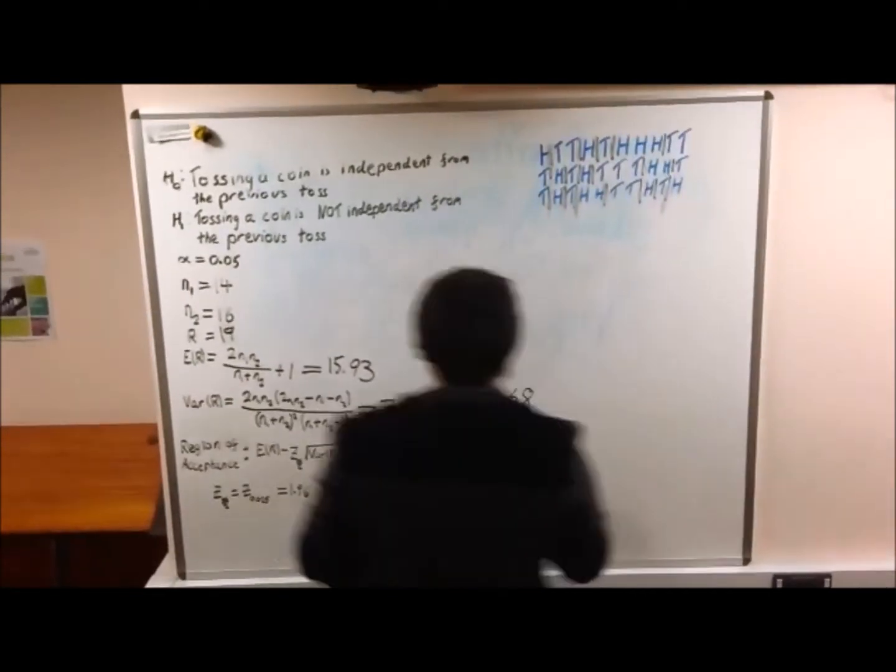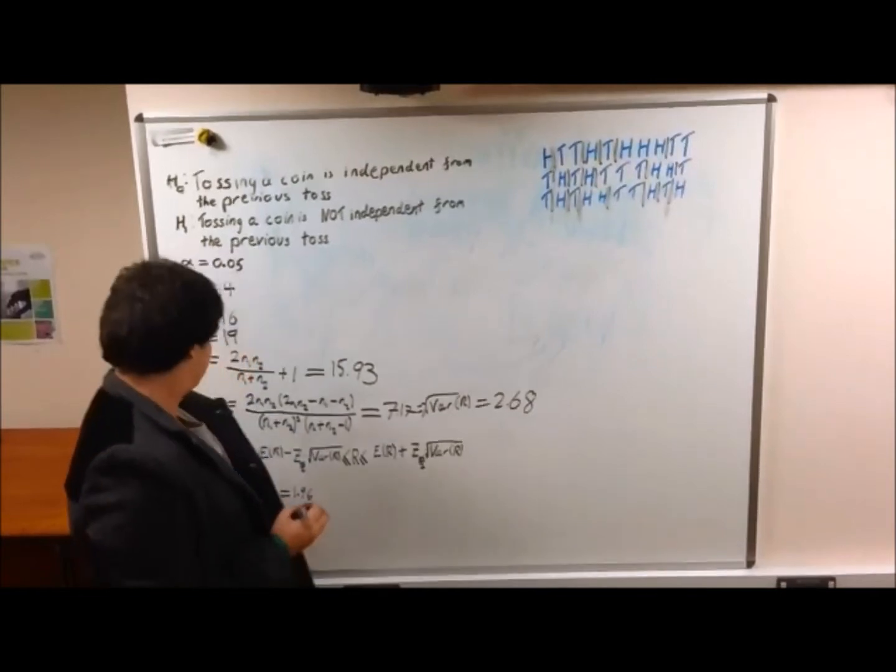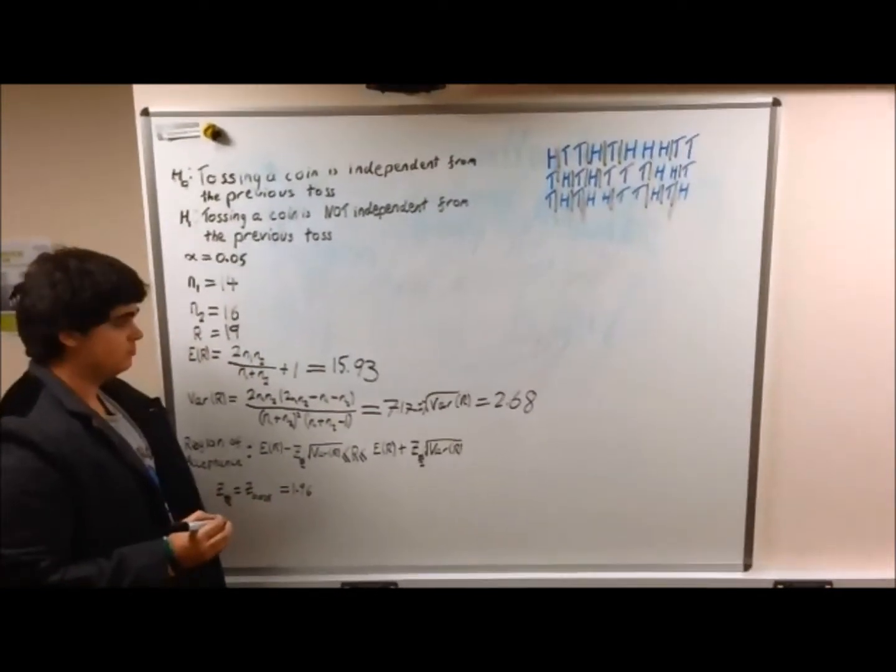In a statistical test, a 95% significant level is standard. This means that we can be 95% confident that our results are true.